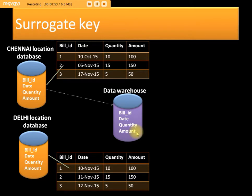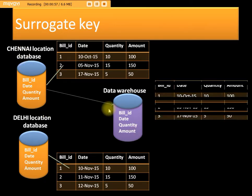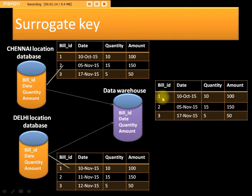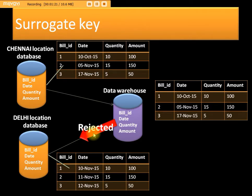When we load data from the channel location database, the three records are loaded successfully. When we load from the daily location database, since bill_id and date are unique columns, it checks for the combination. The bill_id is one, two, three — same as existing — so the records will be rejected into the reject table and won't be loaded into the data warehouse table.